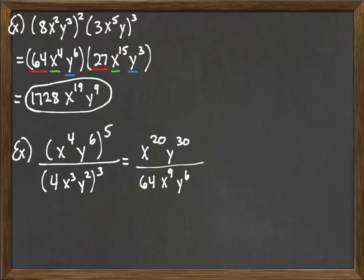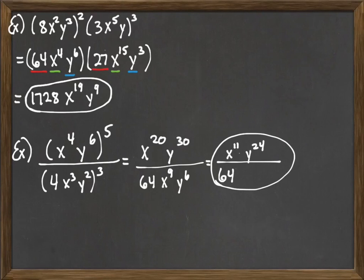Okay, and then we just continue on with our simplifying here. At this point we're going to divide. Now there is nothing for the 64 to go with, so that's just going to stay put in the bottom there. There's no number up top to deal with there, other than a 1. And then we move on and we do our x's. X to the twentieth over x to the ninth. We would do 20 minus 9, which would give us x to the 11. And then we do the y's. Y to the 30 over y to the sixth. We're dividing, so we subtract. 30 minus 6 gives us y to the 24th power. And so that's our answer there. X to the 11th, y to the 24th, all over 64.